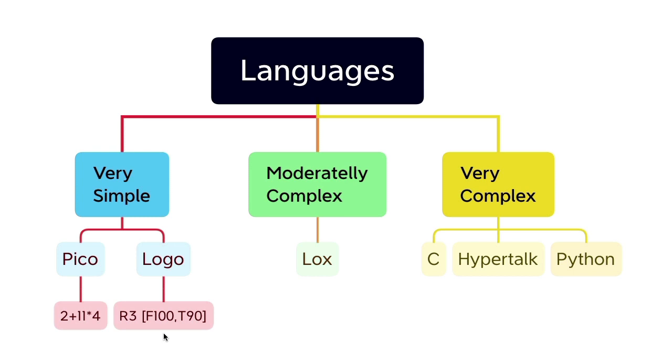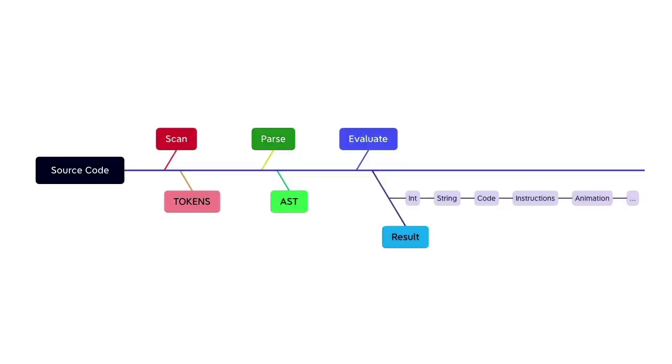Now let's take a look at the usual interpreter process. We start with the source code, scan it and produce an array of tokens. Then you take those tokens, parse them and produce an abstract syntax tree. Then you take that tree and evaluate it and produce a result.